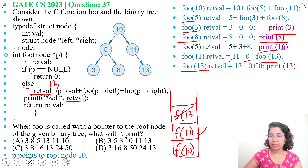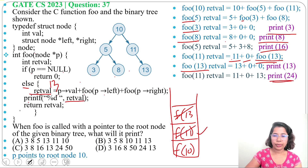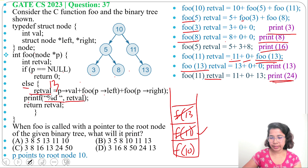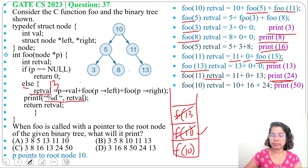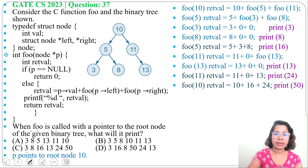For foo(11), substituting the foo(13) value: 11 plus 13 equals 24. foo(11) returns 24 and prints 24. Now back in foo(10), we have foo(5) equals 16 and foo(11) equals 24. So 10 plus 16 plus 24 gives return value 50. foo(10) prints 50.